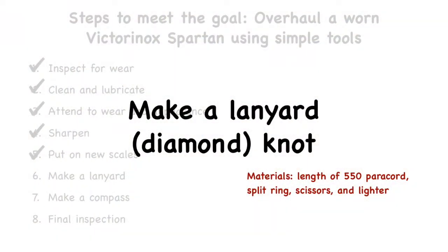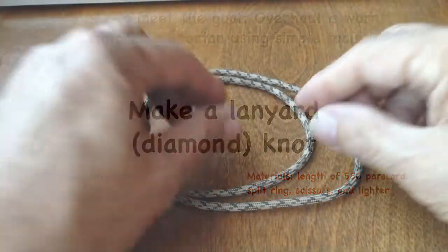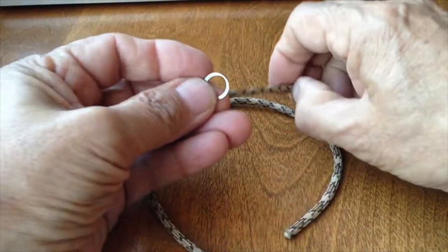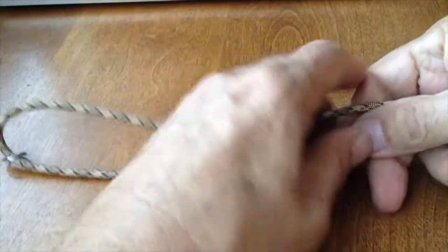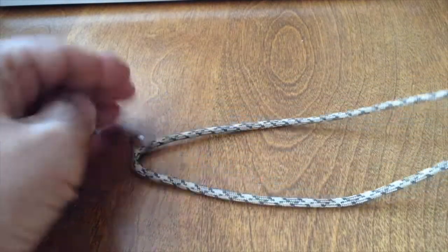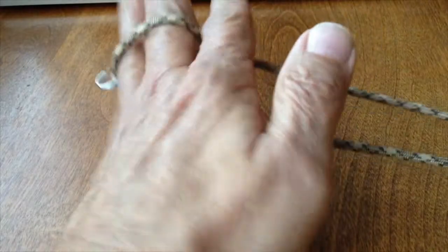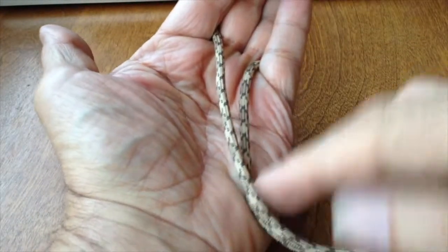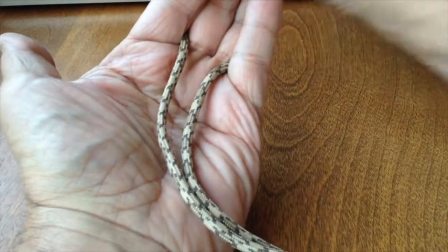The lanyard or diamond knot is a nice addition to the knife. I'm using 550 paracord, but any cord can be used as long as it's reasonably flexible. The small split ring is from the knife and it's more easily placed on the cord at this time. The cord is looped around two fingers. With the rightmost paracord leg, make a loop exactly as it appears, placing the loop above the other paracord leg.